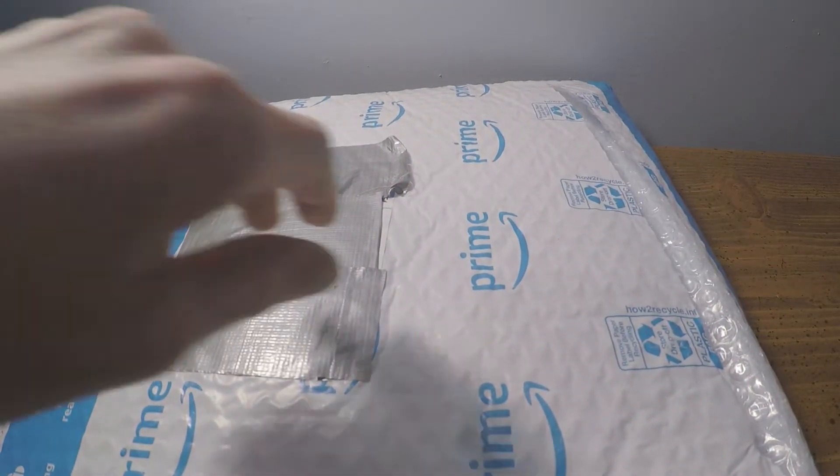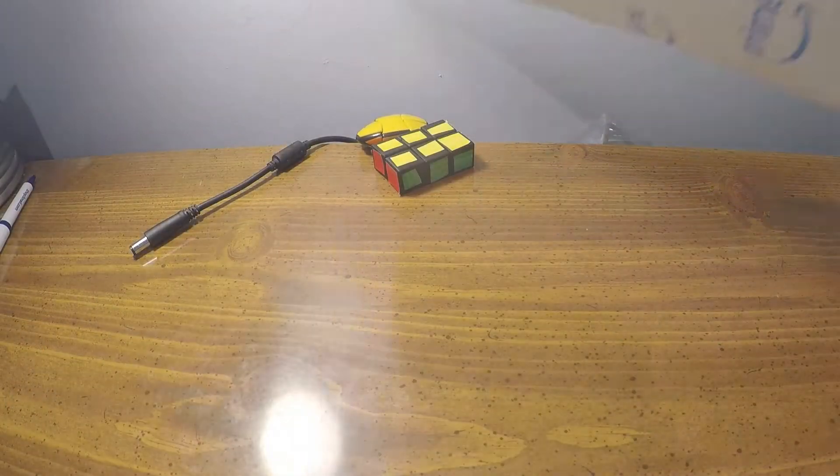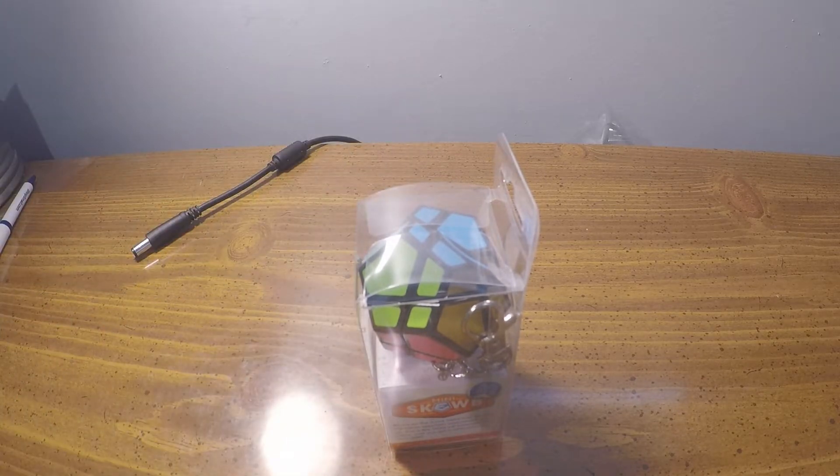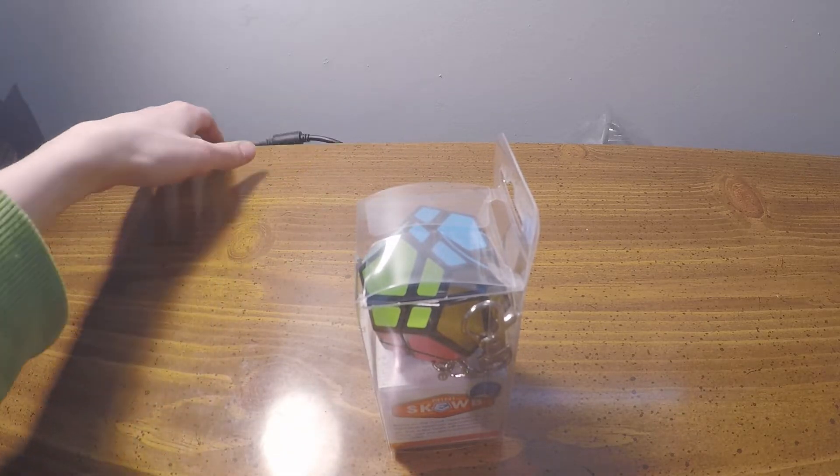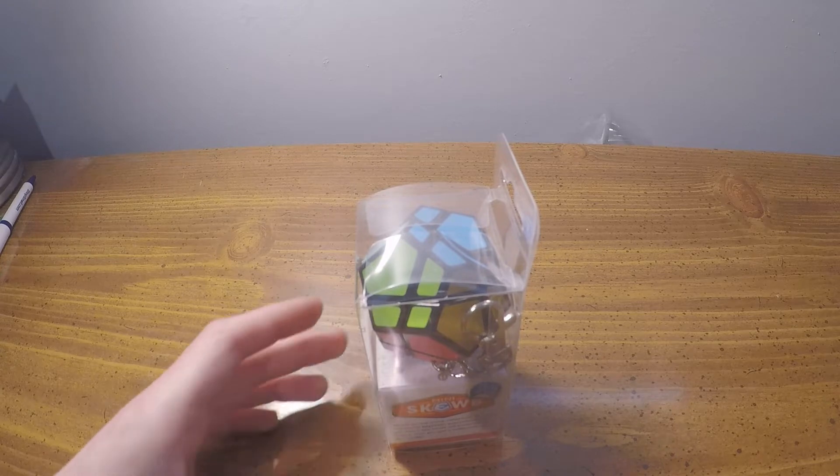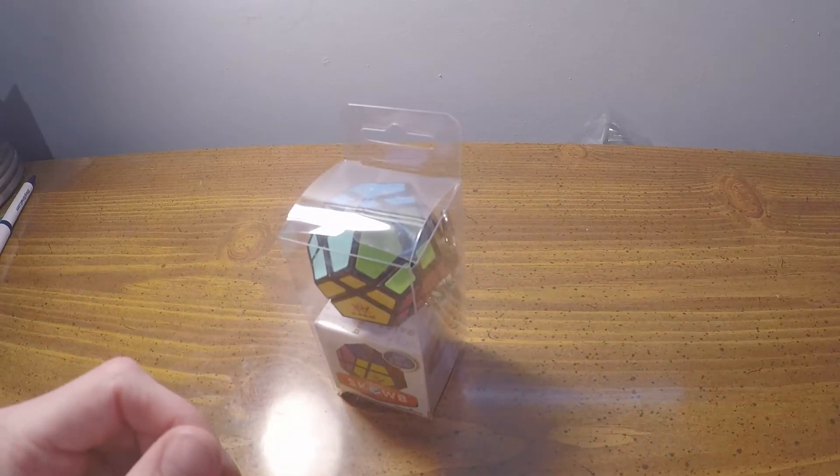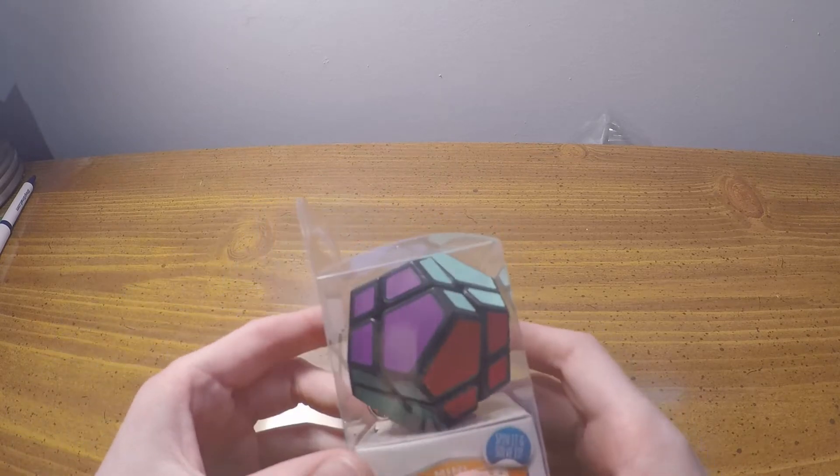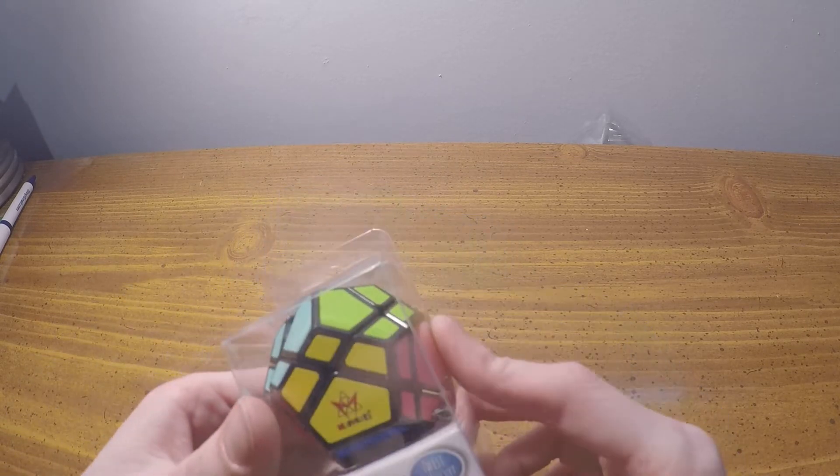Inside is a kind of skew mod - I think it's a shape mod of a skew, but it's also on a keychain. I'm really interested to see how it works and if it solves just like a skew, because I'd imagine it to solve just like a skew.